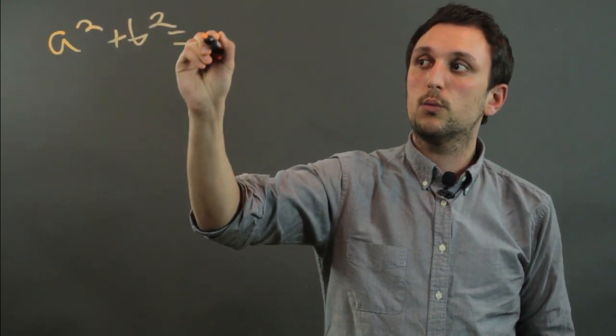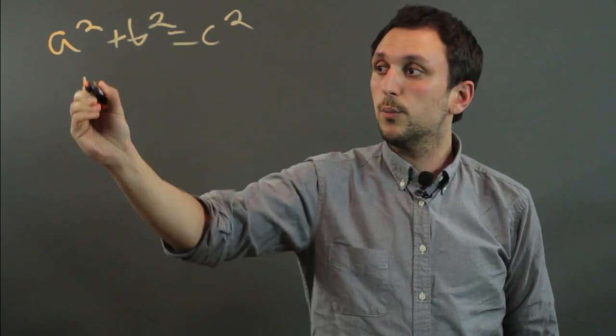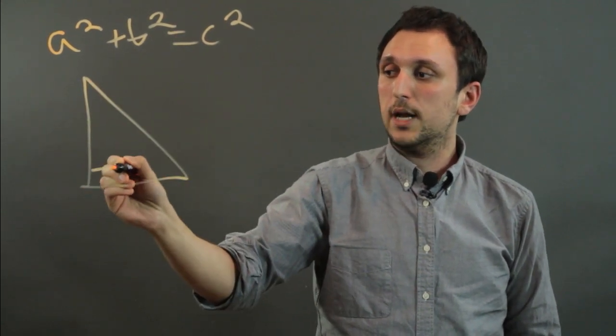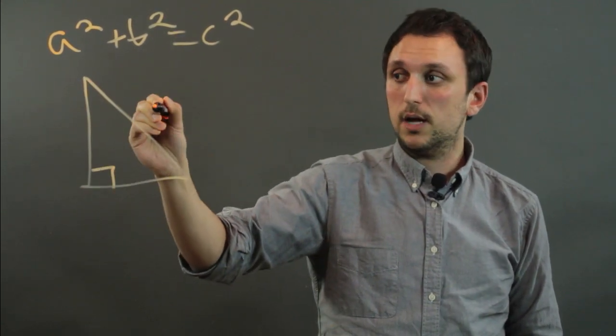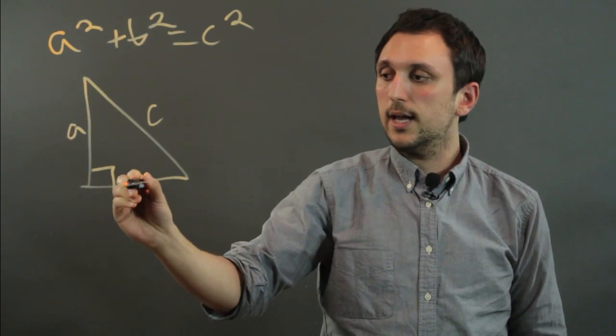So the Pythagorean theorem is A squared plus B squared equals C squared. So when we have a triangle with a right angle, the hypotenuse is C, this leg is A and this leg is B.